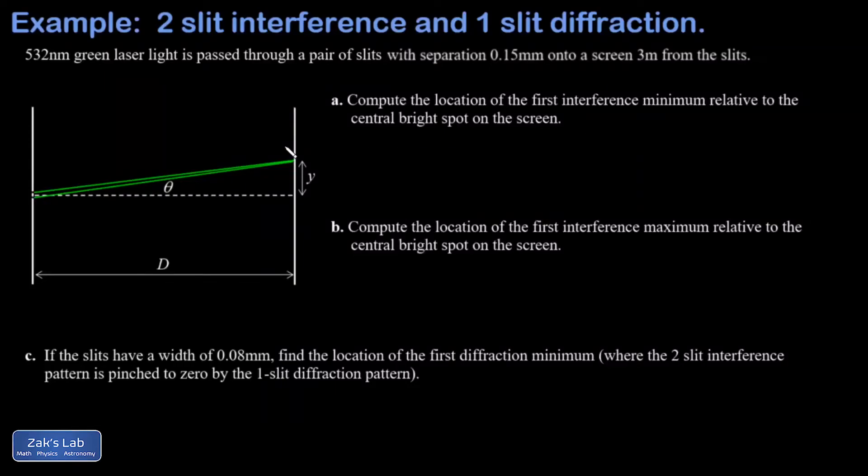In this video we're computing the interference and diffraction minima and maxima for 532 nanometer green laser light passing through a pair of slits with a separation of 0.15 millimeters, with that interference pattern projected onto a screen three meters away from the slits.